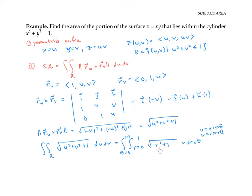I can integrate this using a substitution — I'll call it a w-substitution since u is already used elsewhere. Setting w equals r squared plus 1, dw equals 2r dr, so one half dw equals r dr. When r equals 0, w equals 1, and when r equals 1, w equals 2.